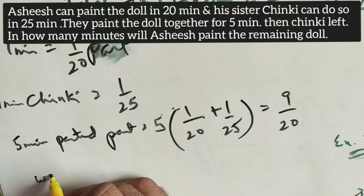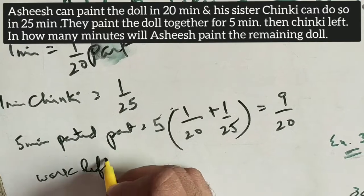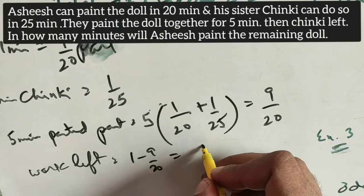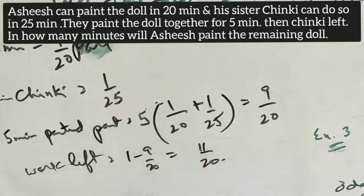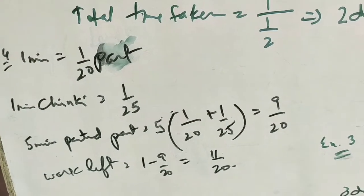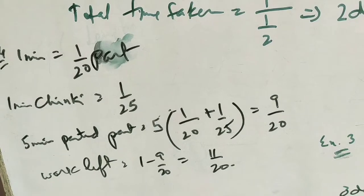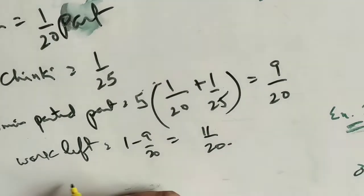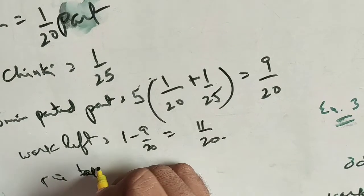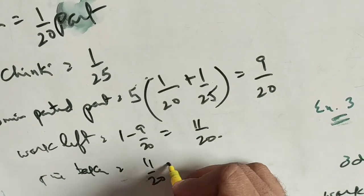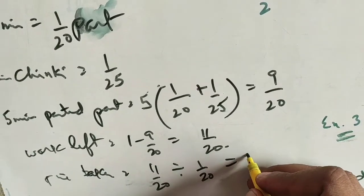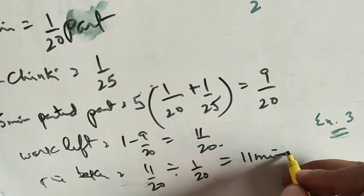Work left is 1 minus 9/20, which equals 11/20. At this point Chinky withdraws, and Ashish has to finish alone. Time taken by Ashish equals work left divided by his per-minute work: 11/20 divided by 1/20 equals 11 minutes.